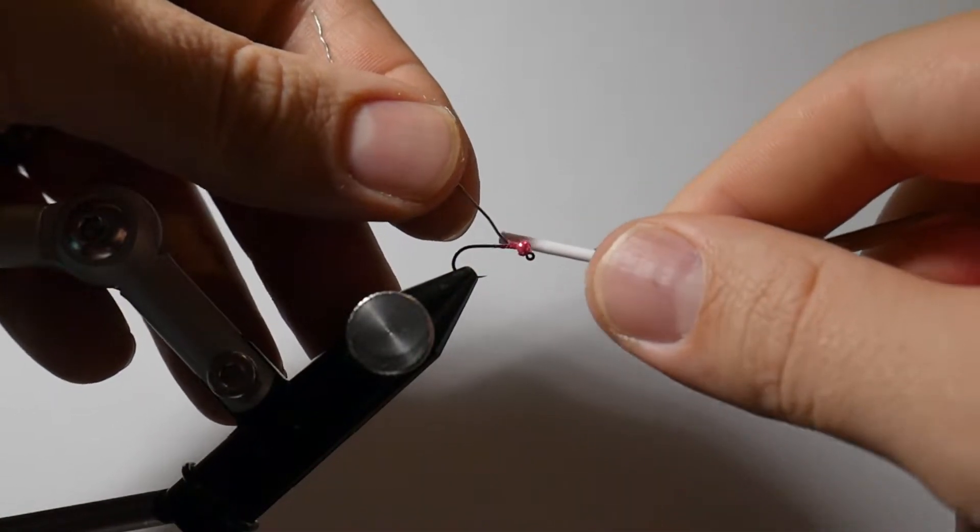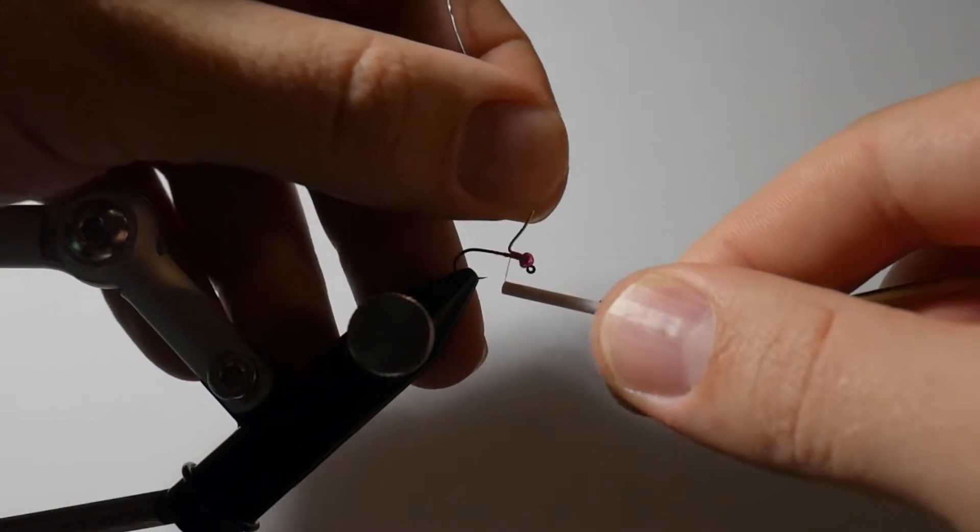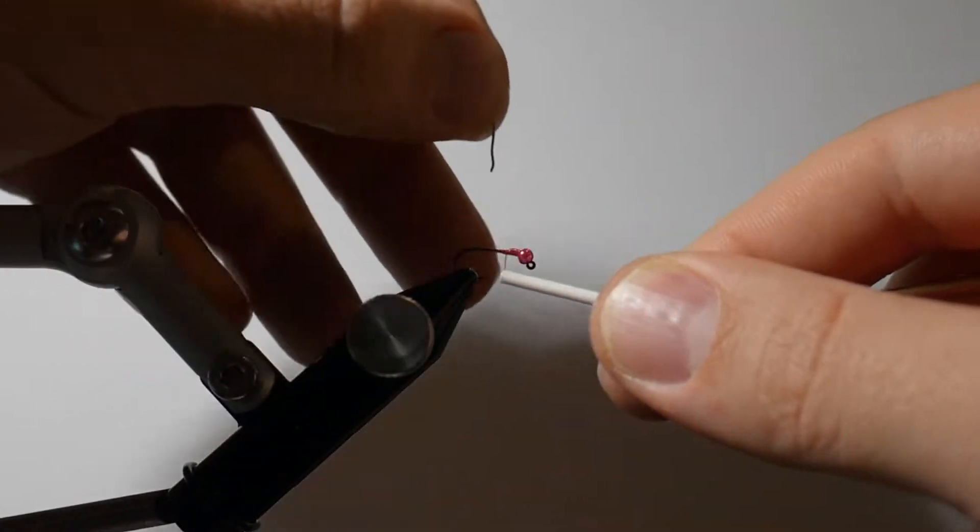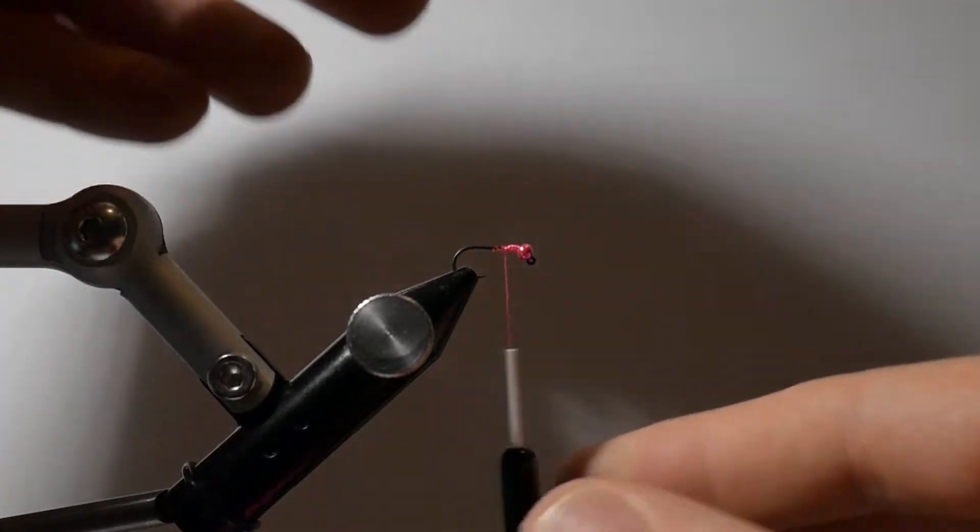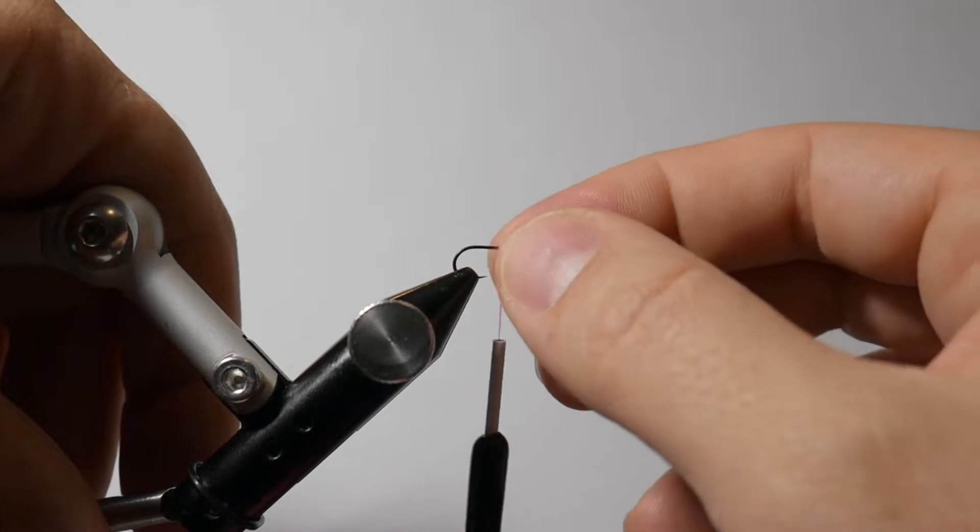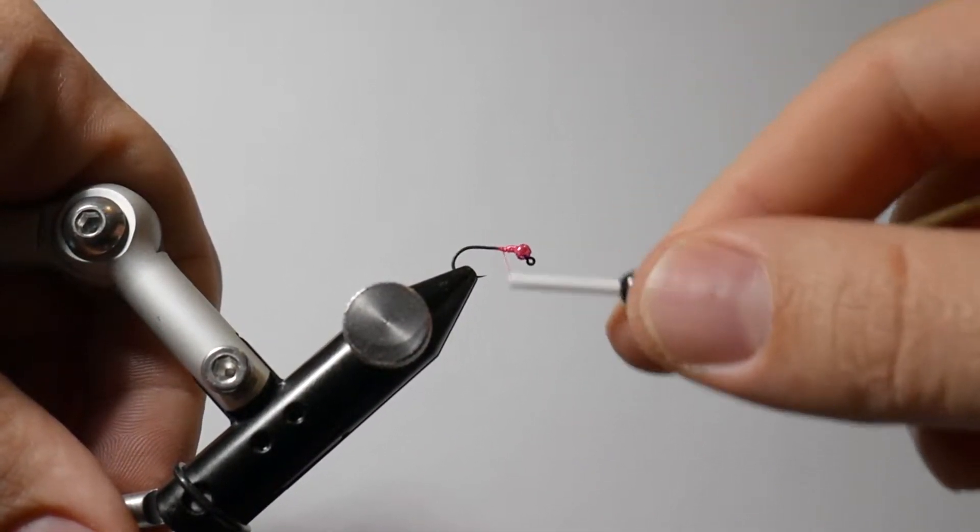Then, very similar to if you've seen the UX Bug pattern, as we work the thread forward we are going to bend this lead forward and back until it breaks off clean. That'll give us a nice bead that stays in place and then also a little ramp that we can work on building up as we go.